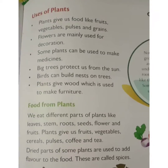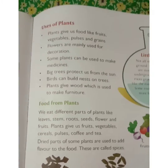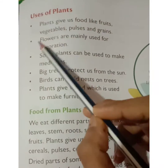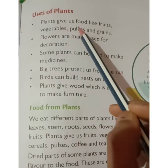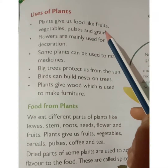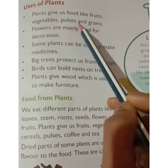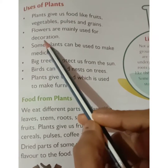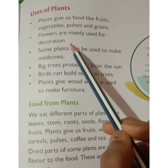Now let's continue with the uses of plants. Plants give us food like fruits, vegetables, pulses, and grains. Different plants give us different kinds of food. Flowers are mainly used for decoration.